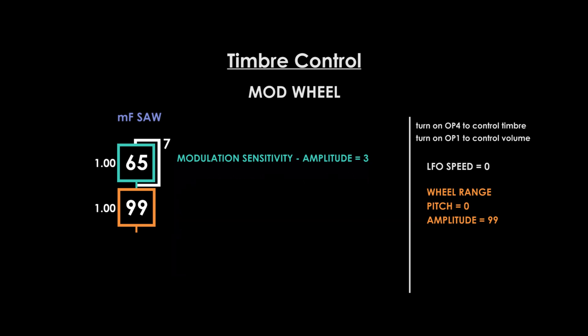If you go back to AMS and engage the carrier, you can control volume at the same time. This next trick will set the LFO to increase and decrease the modulator output level, giving the effect of a repeating filter.